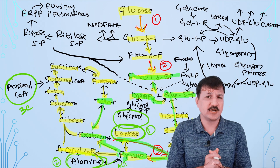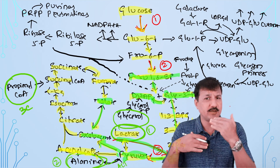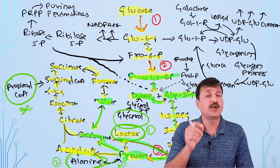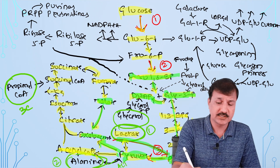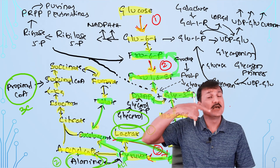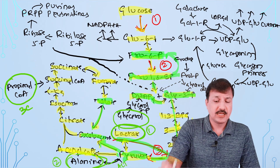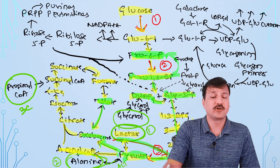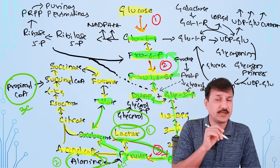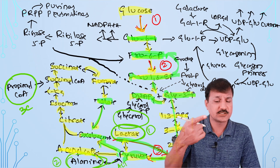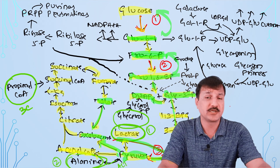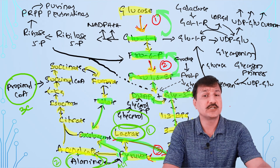Since the PFK1 reaction is irreversible, a special gluconeogenic enzyme called fructose-1,6-bisphosphatase converts fructose-1,6-bisphosphate back into fructose-6-phosphate. Fructose-6-phosphate is then converted to glucose-6-phosphate by a reversible reaction. Since the glucokinase/hexokinase reaction is irreversible, glucose-6-phosphatase converts glucose-6-phosphate into glucose. Glucose-6-phosphatase is located in the endoplasmic reticulum, especially in the liver, kidney, and small intestine.